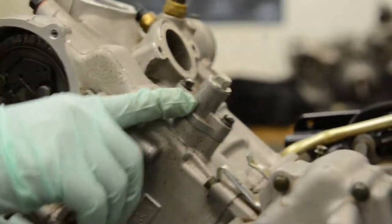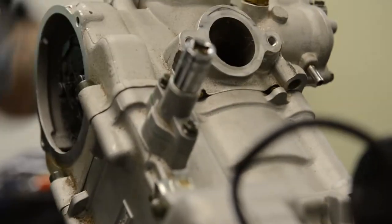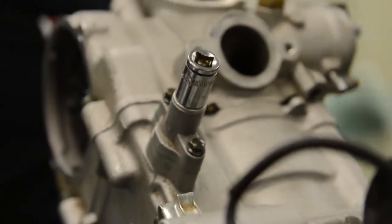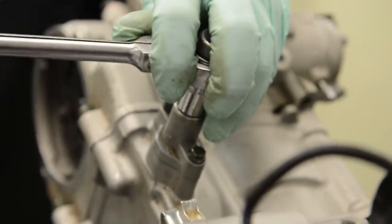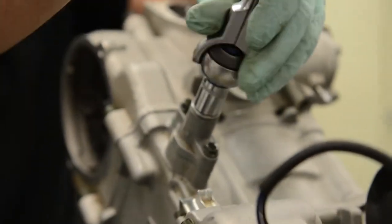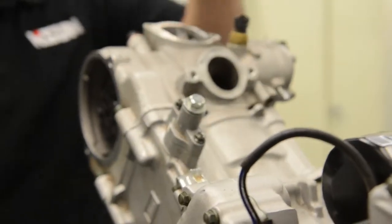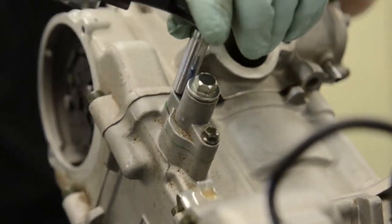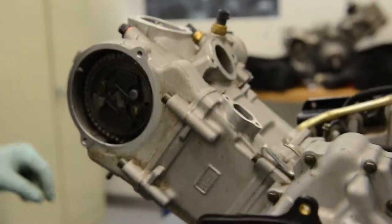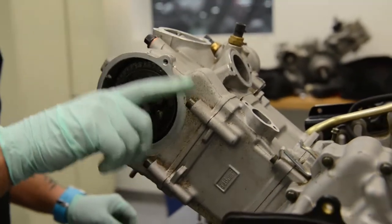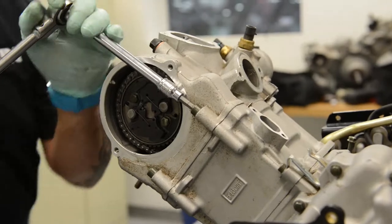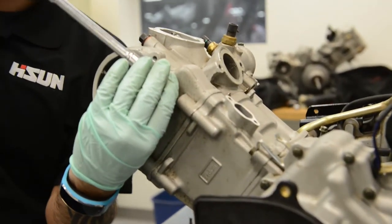We'll move the timing chain tensioner to release the tension off the timing chain. First you'll loosen the bolt on the back of the timing chain tensioner to relieve the tension off the chain. Once you remove the tension on the center bolt you can now remove the 8 millimeter bolts on both sides and remove the chain tensioner from the vehicle.